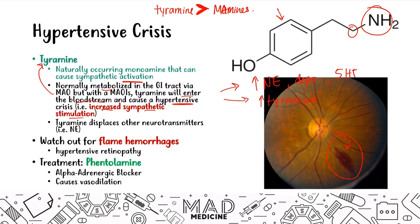MAOIs are different — they function by inhibiting the breakdown of norepinephrine, serotonin, and dopamine. There are two types: MAO-A breaks down dopamine, serotonin, and norepinephrine; MAO-B only breaks down dopamine. Selegiline is the MAO-B inhibitor and can be used to treat Parkinson's disease. Watch out for hypertensive crisis when patients on MAOIs eat tyramine-rich foods.